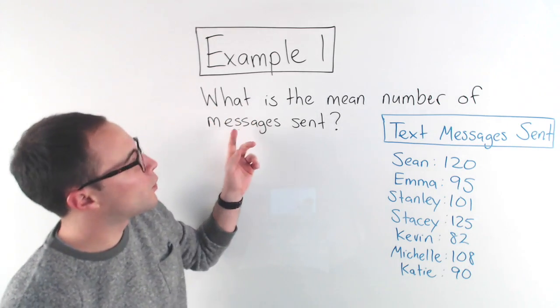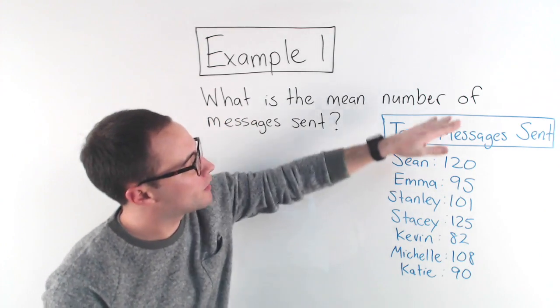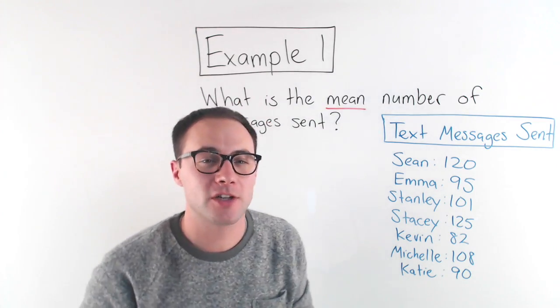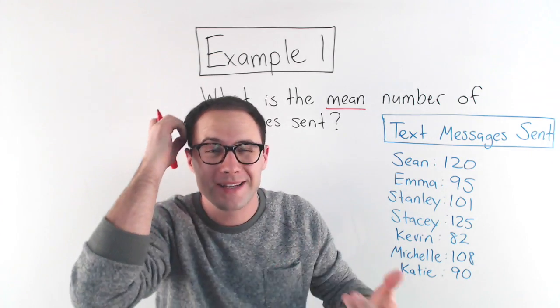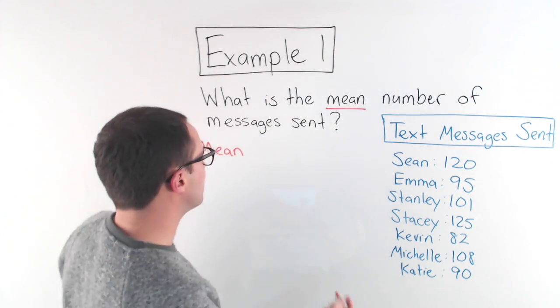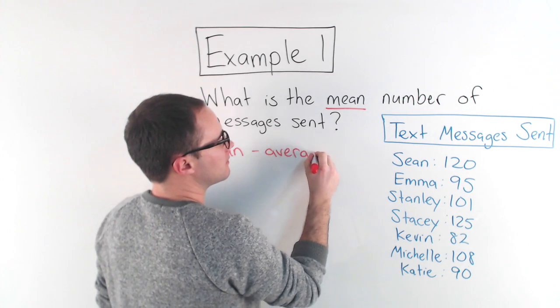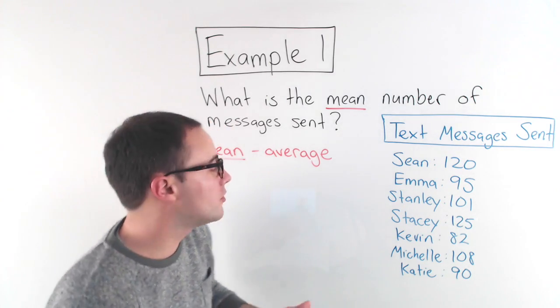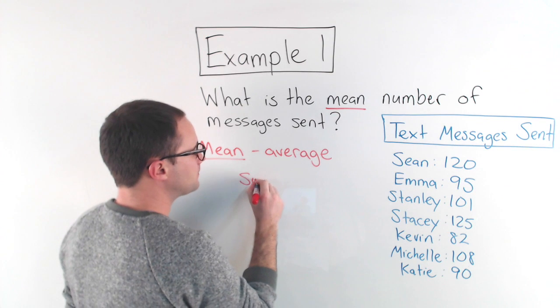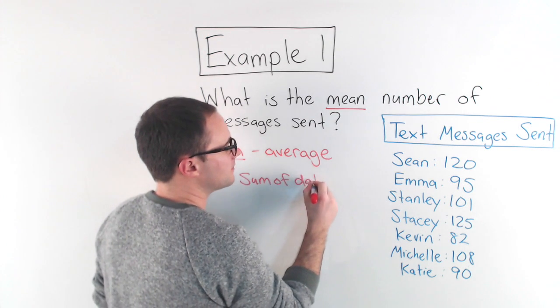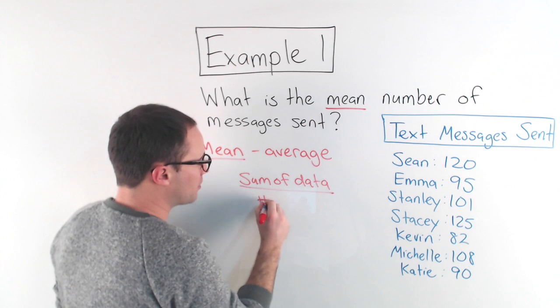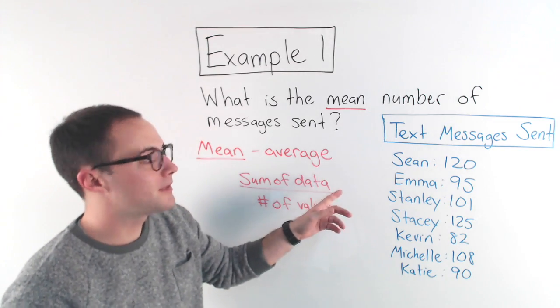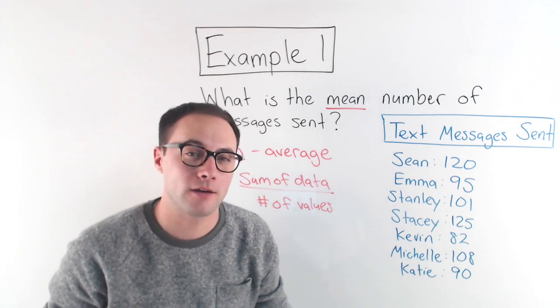Here's example one. What is the mean number of messages sent? So we're finding the mean. That's going to be the first measure of center that we're going to talk about. So first, what is mean? Another word for that is the average. Finding the mean of a set of data is the same thing as finding the average of that data. To do that, all you do is you take the sum of the data and divide it by the number of values. So you add them all up, that's the sum, then you divide it by how many pieces of data there are.